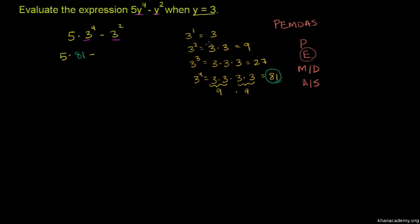3 squared gives us 9. So we have 5 times 81 minus 9.